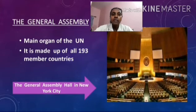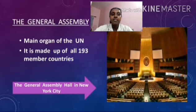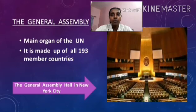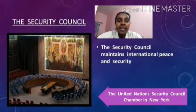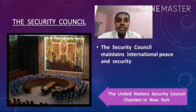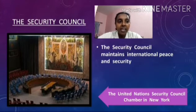Based on the discussions, decisions are taken on what actions should be taken. The main organ of the UN is the General Assembly. Now, the second organ of the UN is the Security Council. The Security Council is the most powerful organ of the UN. It is responsible for maintaining international peace and security. It has 15 members.